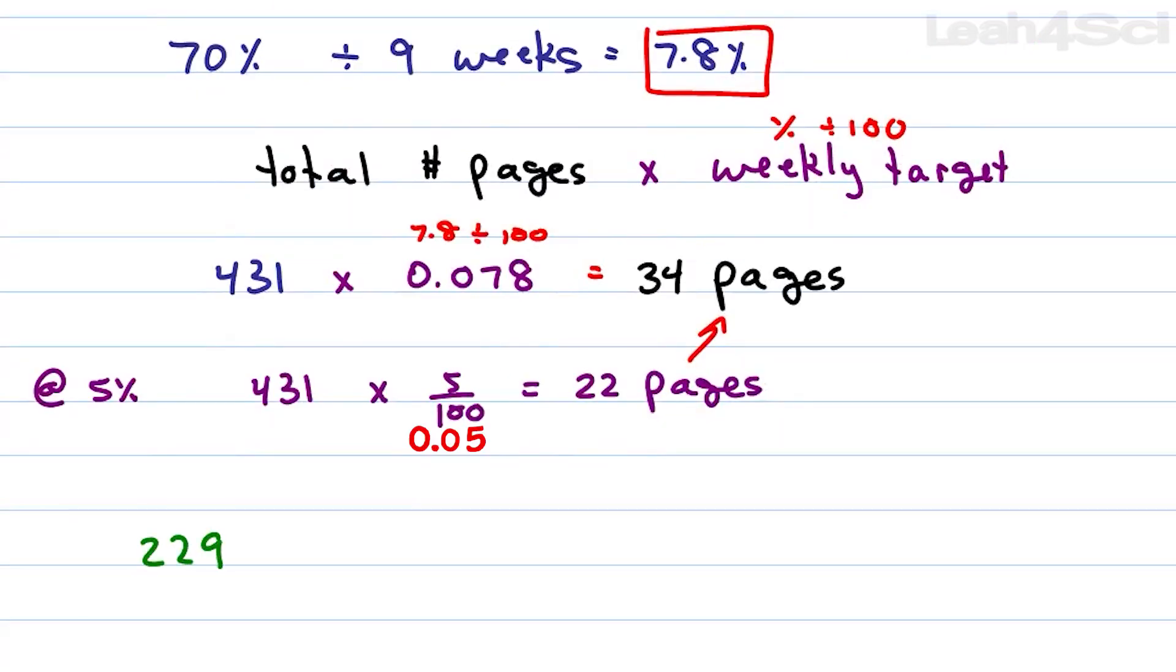Looking back at Examkrackers physics with 229 pages, first let's see what 5% per week gave us. So we do 229 times 5 over 100 or 0.05, which gives us 11.45 or 12 pages per week.